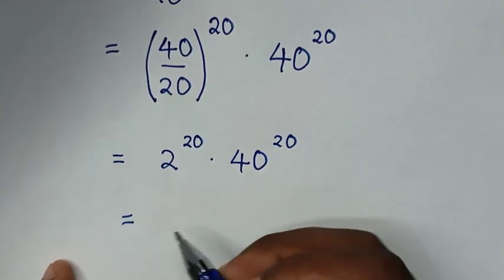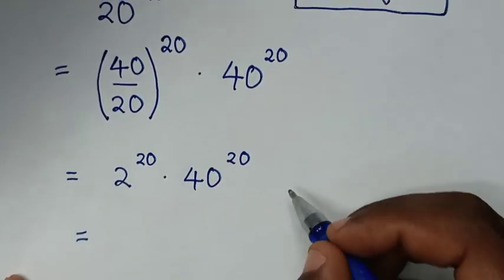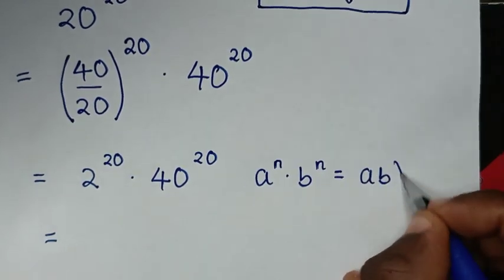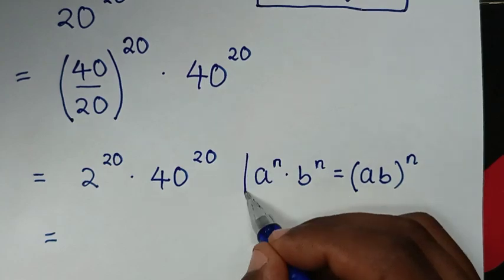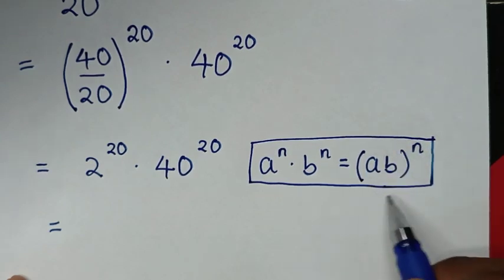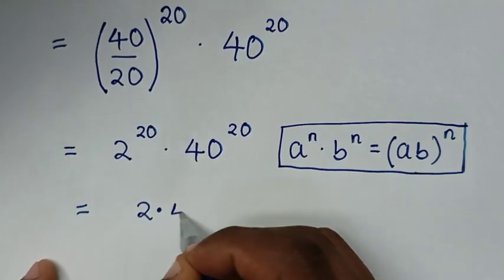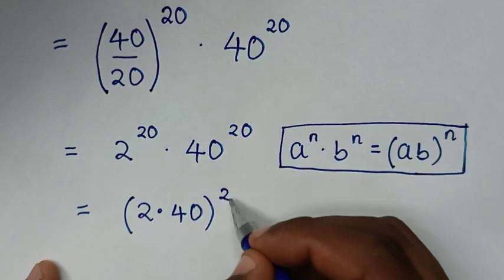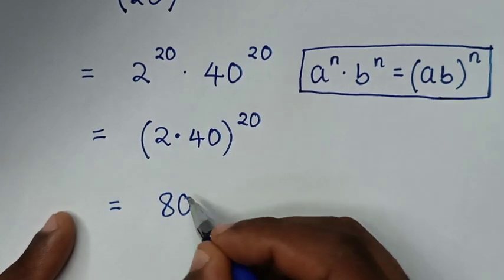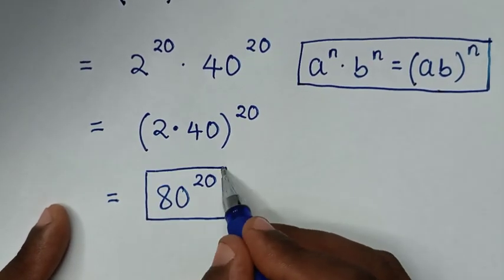Then in the next step, from this multiplication of exponents with the same power of 20, this is in the form of a power of n times b power of n, which is equal to (a times b) bracket to the power of n. So we multiply the bases 2 times 40, giving us (2 times 40) to the power of 20. So it will be 80 power of 20. Therefore, this is our final answer: 80 power of 20.